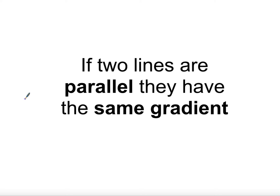Hi guys, a bit of new stuff this week — looking at parallel and perpendicular lines, just building on top of the stuff we did last week. Great work getting all that done, lots of you were working really hard. So the first thing: I've opened up with the statement that if two lines are parallel they have the same gradient. I want you to replace the idea that parallel means lines that never meet with: parallel means same gradient.